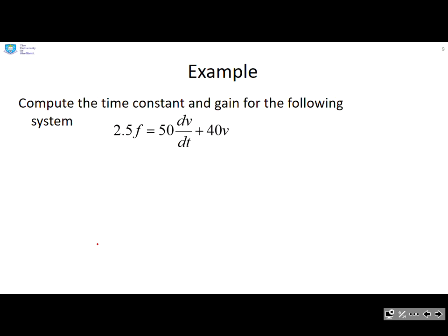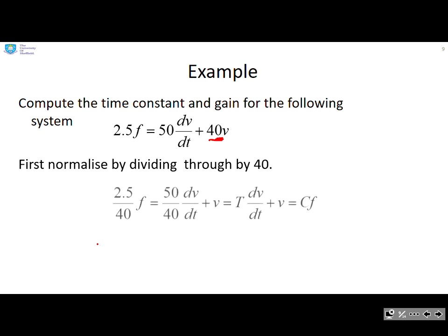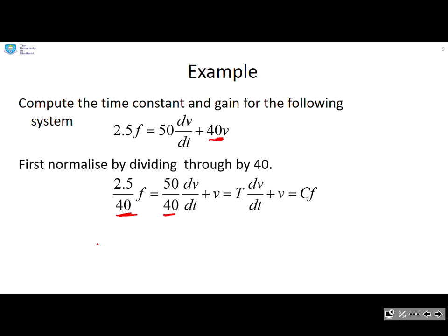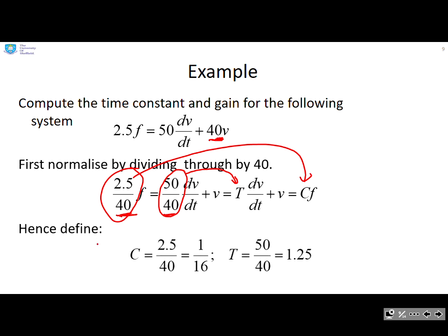So here's an example. Compute the time constant and gain for the following system. So we normalize by dividing through by 40. Why 40? Because the 40 is here on the v and we want to make the coefficient on the v equal to 1. So we divide through by 40 and you can see I've done that here. So I've got 2.5 over 40, 50 over 40 and so now we can see that this term here has got to be T and this term here has got to be c. So what do we get? We get c is 1/16 and T is 1.25.